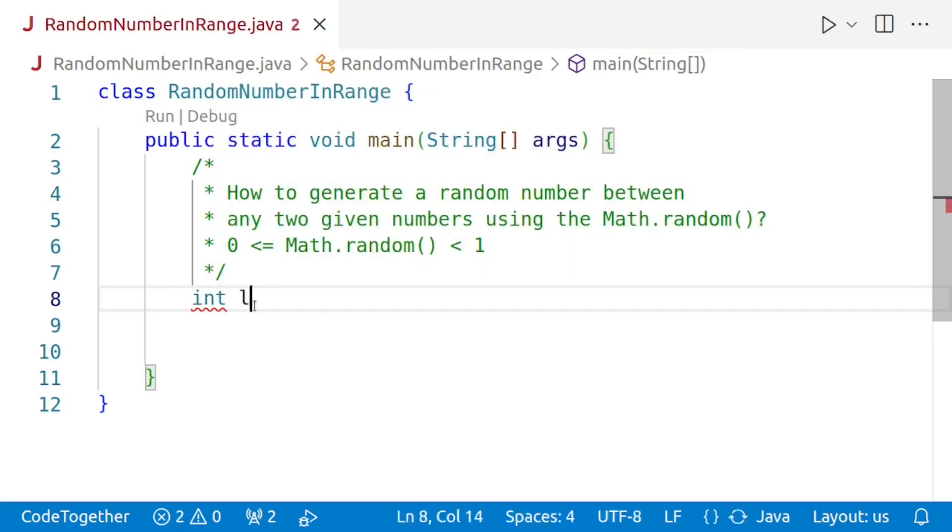Let's say the range is represented by lower bound, that is from which value, to upper bound, that is to which value. Let's also assign some values to it so that we can run the program. So, we'll say lower bound is equal to 5 and upper bound is equal to 10. For the purpose of this program, I want to generate random numbers between 5 and 10, both inclusive.